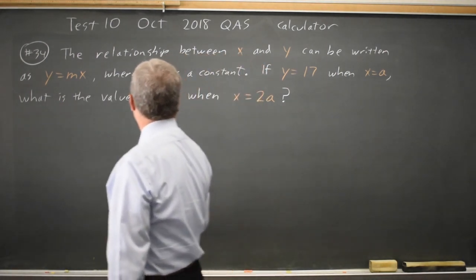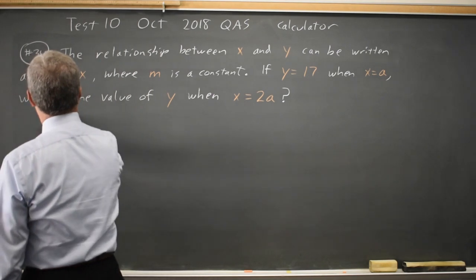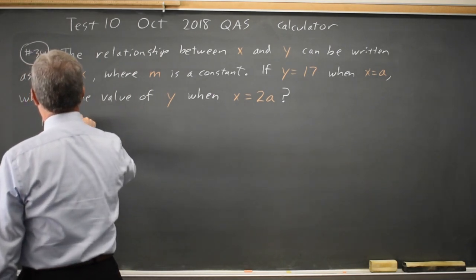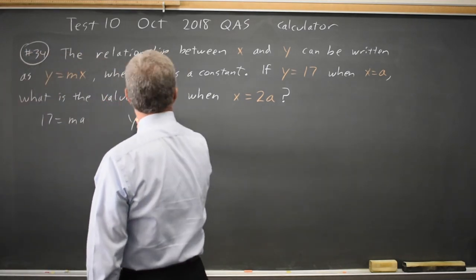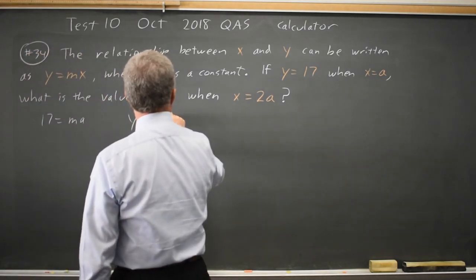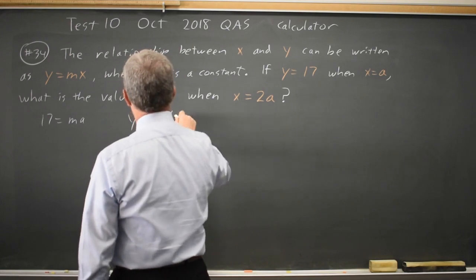They say y equals 17 when x equals a, so 17 equals m times a, and they're asking for the y value when x is 2a.